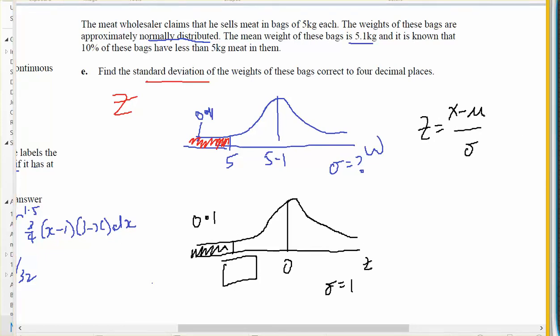So I'm going to go interactive, distribution, inverse, normal. I want a left tail. I want the probability to be 0.1. And that will give me a Z score of negative 1.28155.